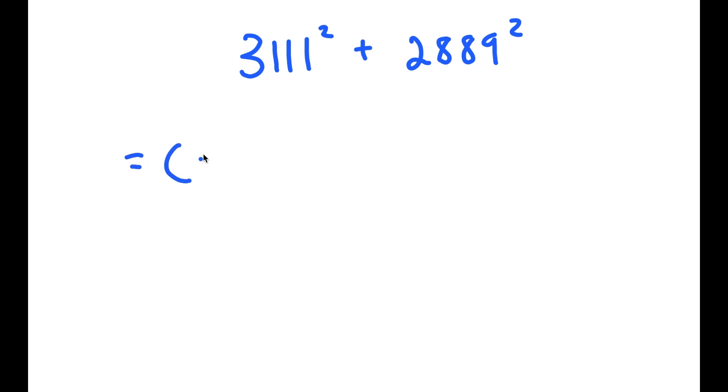So to solve this, I'm going to rewrite this as 3,000 plus 111 squared plus 3,000 minus 111 squared.